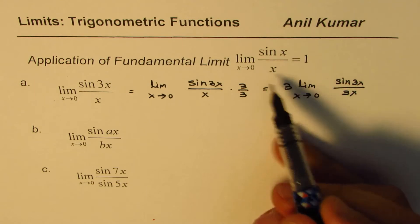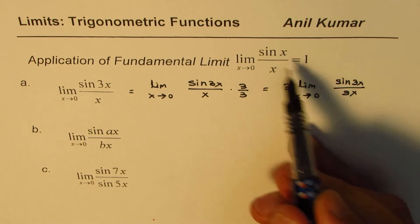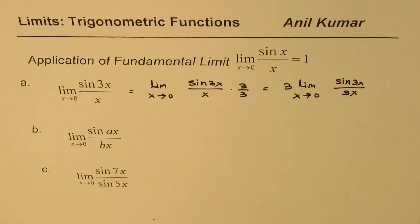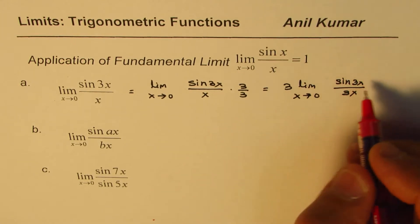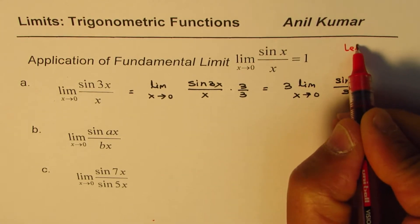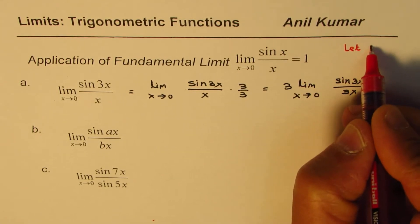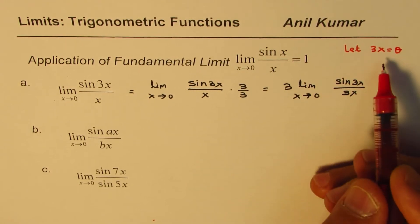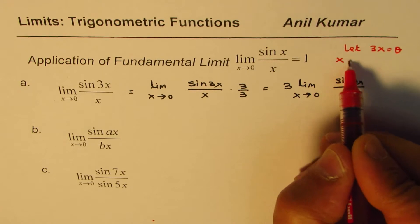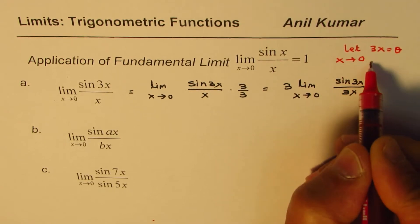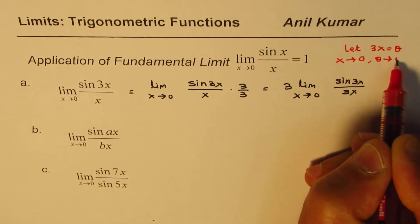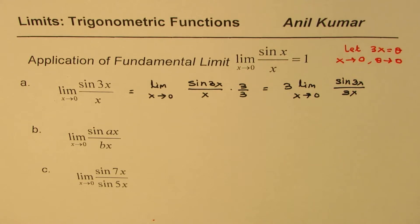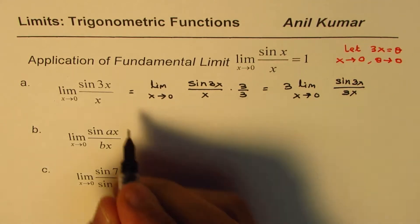Now x could be 3x, 5x, same thing. So you could always write a small substitution saying that let 3x equals to theta. Then as x approaches 0, theta approaches 0. So this kind of substitution you can make here.